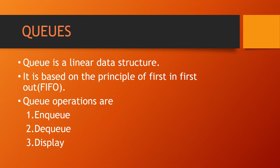Hello everyone. In this video I am going to explain about queues. Queue is a linear data structure, which means the data is arranged in an ordered manner, and it follows the mechanism first in first out. The element which enters first into the queue should be removed first from the queue. The queue operations are enqueue, dequeue, and display.